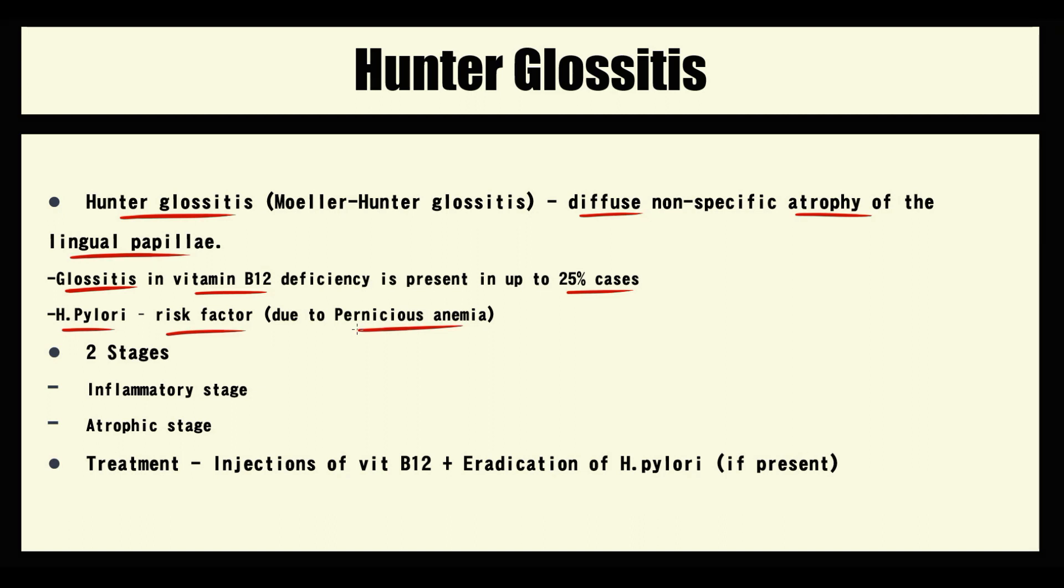The pathogenesis of Hunter glossitis occurs in two stages. Initially inflammation occurs, and then after inflammation, atrophy develops.